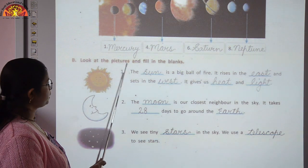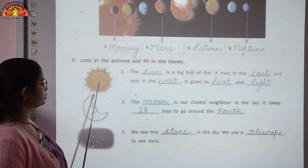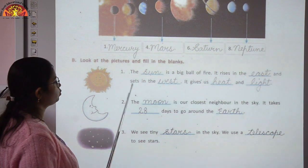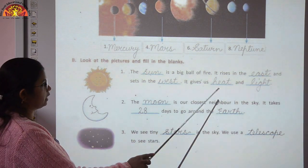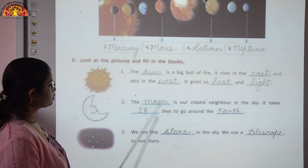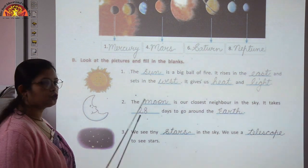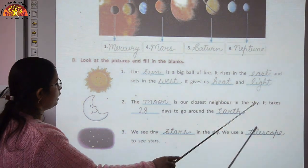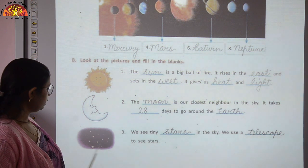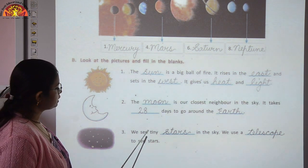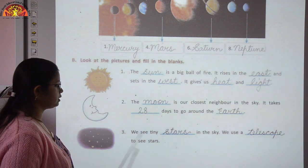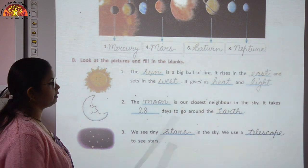Exercise B: look at the pictures and fill in the blanks. The sun is a big ball of fire — it rises in the east and sets in the west, and gives us heat and light. The moon is our closest neighbor in the sky — it takes 28 days to go around the Earth. We see tiny stars in the sky and we use a telescope to see stars.